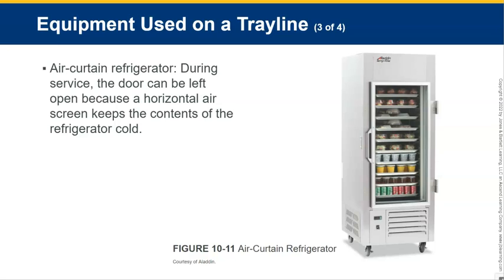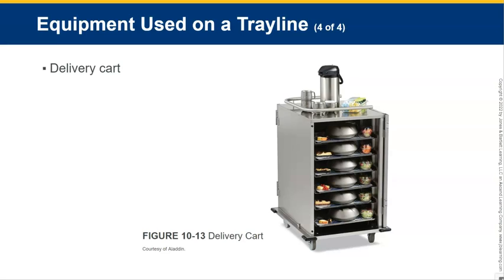This picture shows an air curtain refrigerator. When the door is open, a horizontal air screen keeps the contents of the refrigerator cold — essentially there's a constant flow of air blocking the cold air from escaping. This allows you to leave the door open, making it easier for the assembly of the meal.